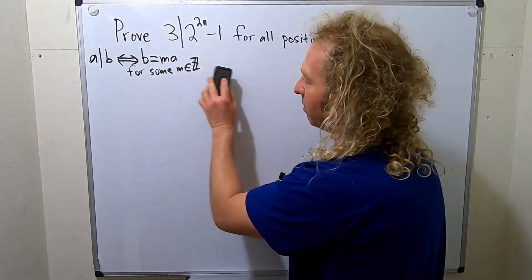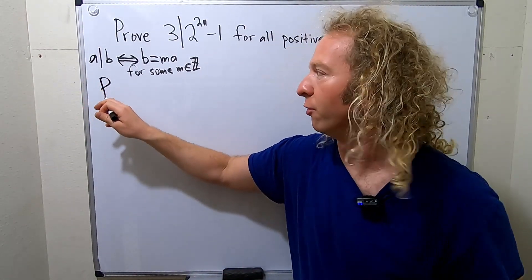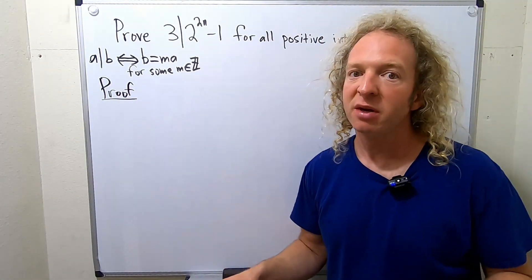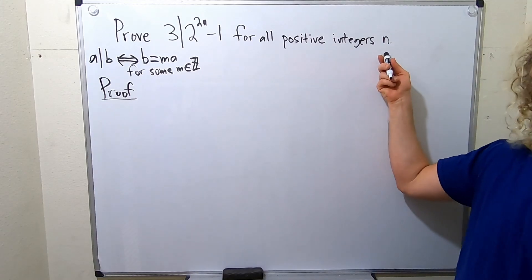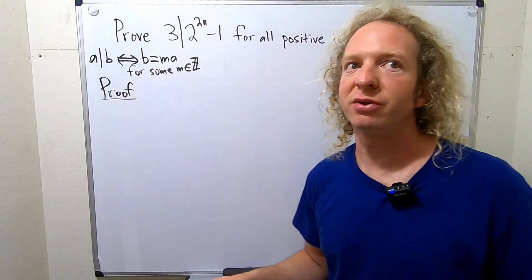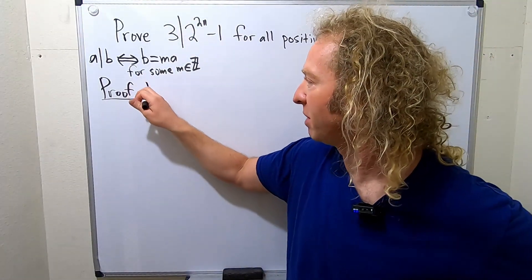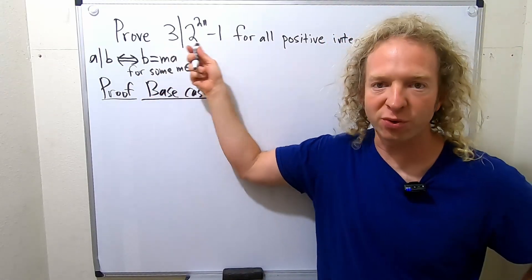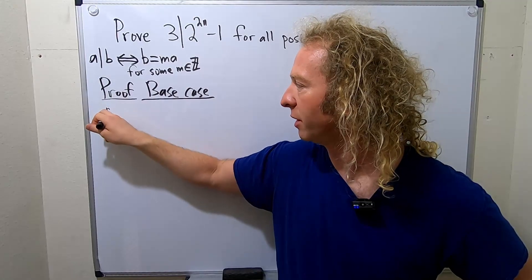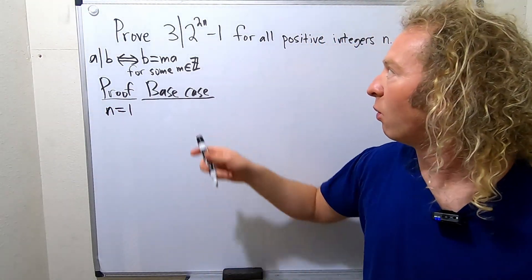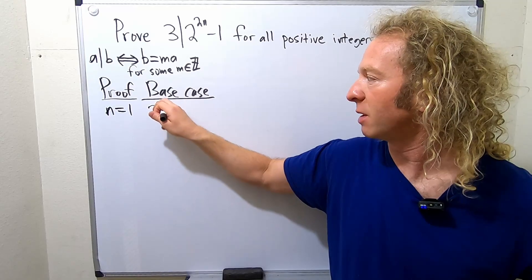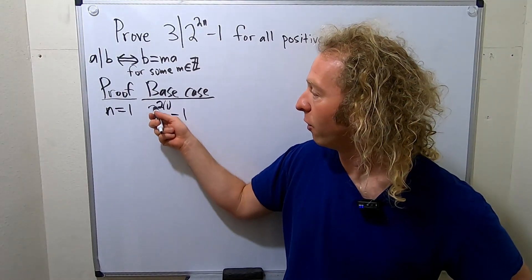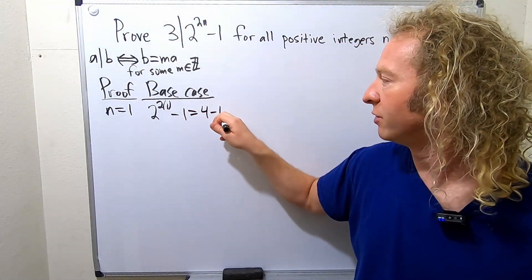Now that we have that out of the way, let's go ahead and go through the proof very carefully. In an induction proof, you have a couple of steps. The first step is the base case. In this case, it's for all positive integers N, so the smallest positive integer is 1. We have to prove this is true when N equals 1. So when N equals 1, we have 2 to the 2 times 1 minus 1 — that's 4 minus 1, which is 3.